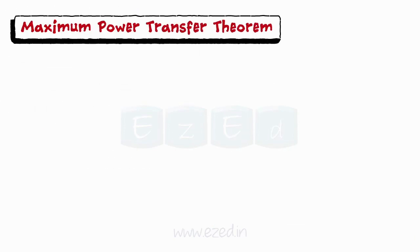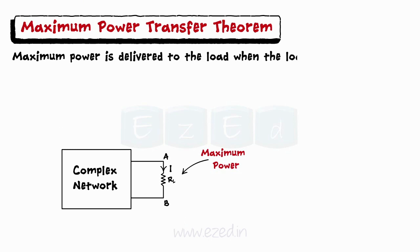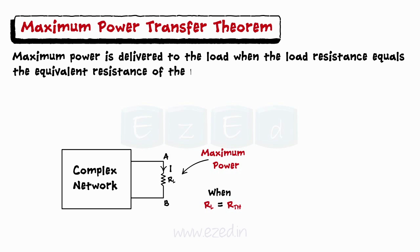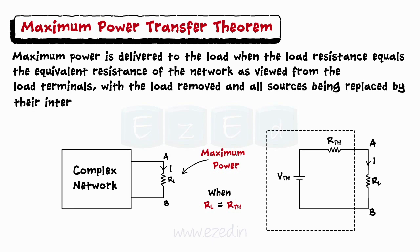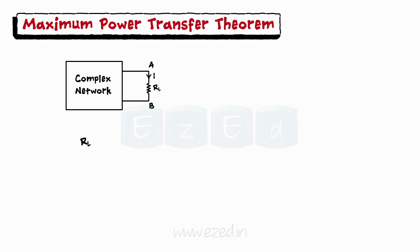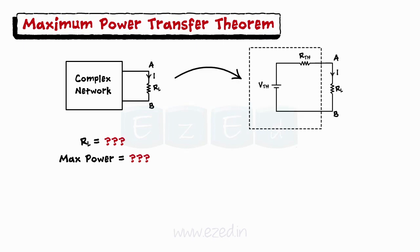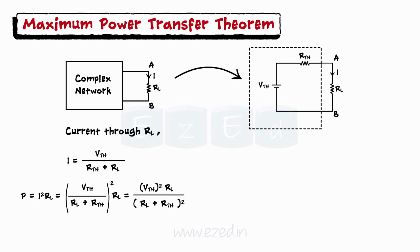The last theorem we need to study is the Maximum Power Transfer Theorem. It states that maximum power is delivered to the load when the load resistance equals the equivalent resistance of the network as viewed from the load terminals, with the load removed and all sources replaced by their internal resistances. We replace the complex circuit by Thevenin's circuit and find Rth. Current through RL is calculated as I equals Vth upon (Rth plus RL), and power delivered to RL is given by P equals I squared times RL.